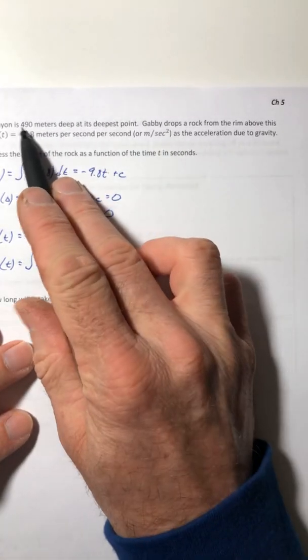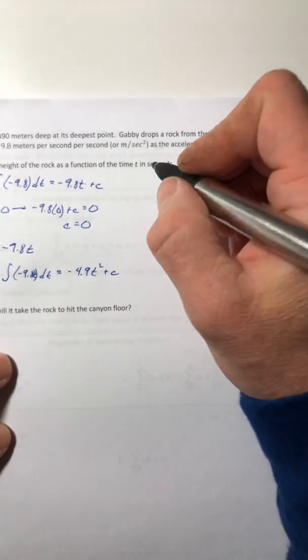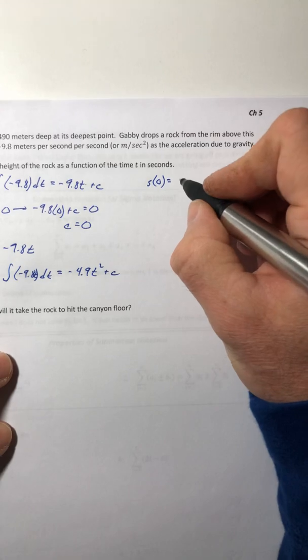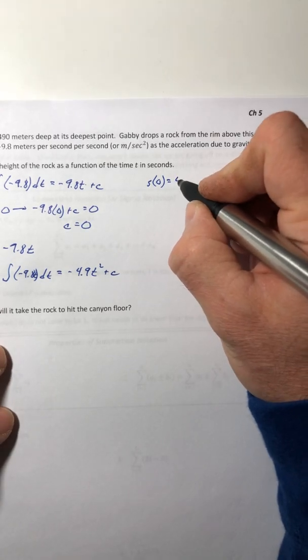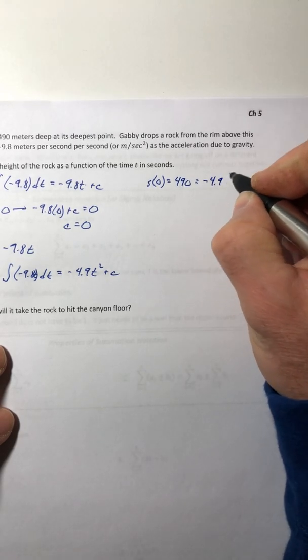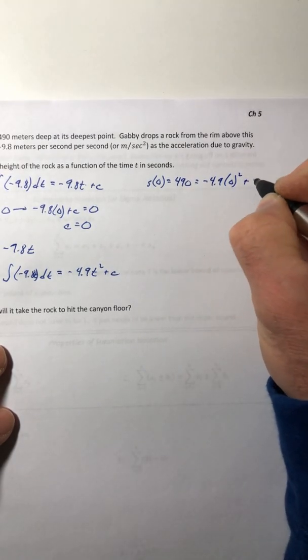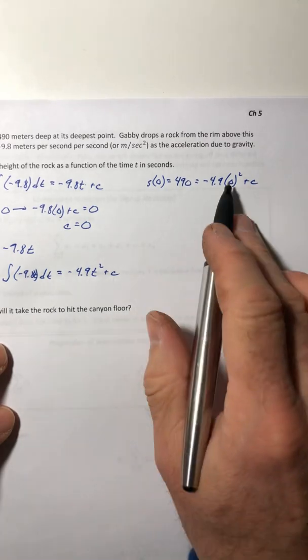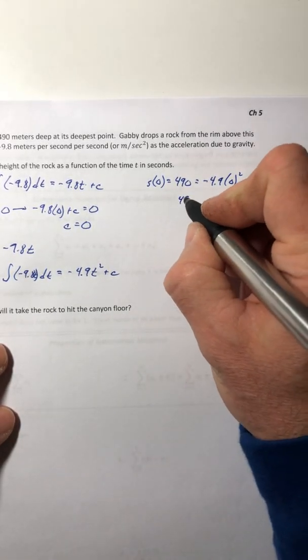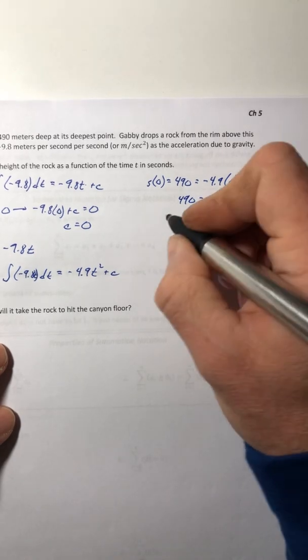So we know how high it is when time is 0. It's 490 meters. And then we're sticking a 0 for the T. So that's going to knock that whole thing out. So C is 490.